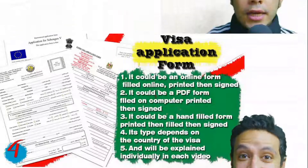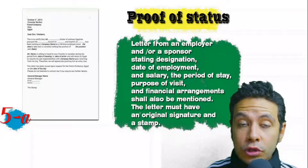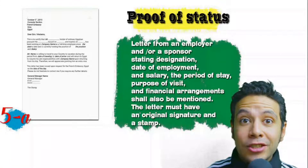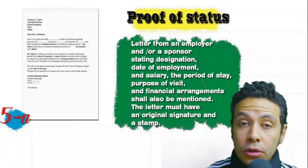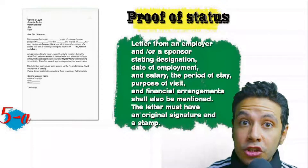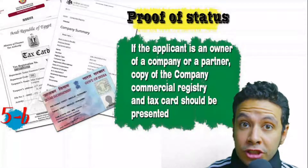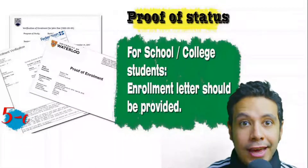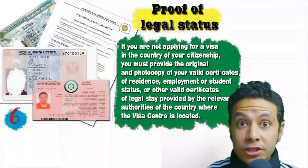In most visa application processes you will need to provide a proof of status. If you are an employee, provide a letter from your employer or HR department mentioning your name, work details, salary, address, and contact numbers. All letters must have an original signature and stamp. If you own a company or run your own business, your commercial registry and tax card must be presented. If you are a student, an enrollment letter from your university or school should be provided.